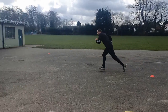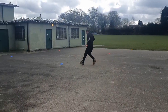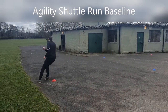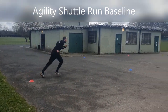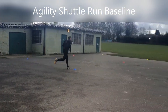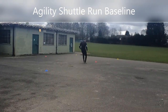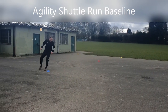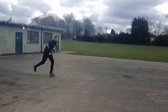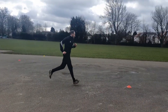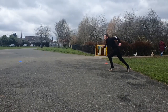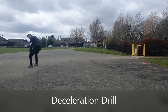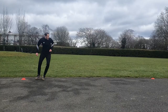Athlete A first completes the change of direction shuffle. During deceleration, Athlete A relies on a shortened stride pattern to slow down gradually rather than using a more pronounced dynamic change in velocity. The athlete also presents a high centre of gravity during the change of direction and is subsequently unable to achieve much linear acceleration during the toe off.